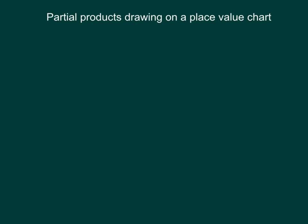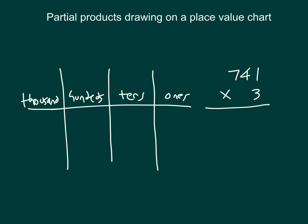Here is something a little bit different, where we will be showing a partial products drawing on a place value chart. We will go ahead and show that partial products drawing on the place value chart with 741 times three. We are still working with partial products. For that first partial product, we're looking at one one times three — and this is how we show it within our place value chart.